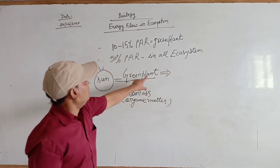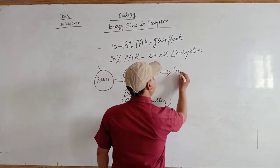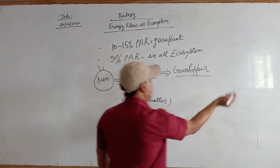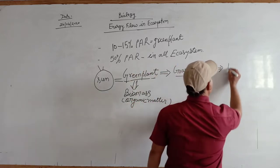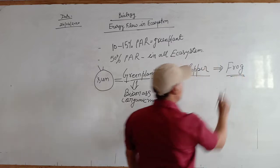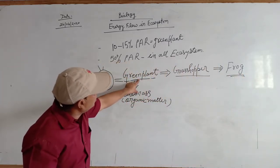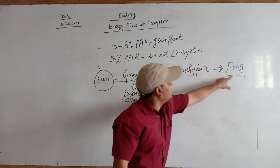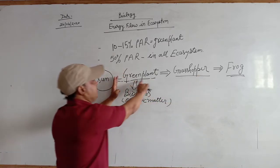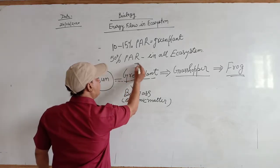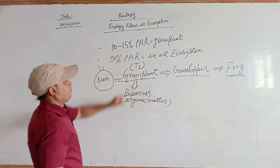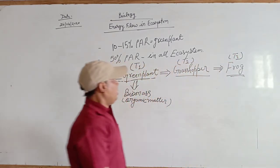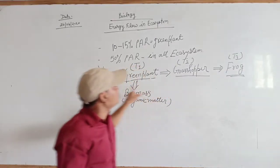This biomass is transferred from green plants to another organism like a grasshopper, and from the grasshopper to a frog, and so on. This energy transfer — from green plant to grasshopper to frog — represents steps called trophic levels. We denote them as T1 (first trophic level), T2 (second trophic level), and T3 (third trophic level). All these trophic levels are connected by a chain known as the food chain, which exists in all ecosystems.